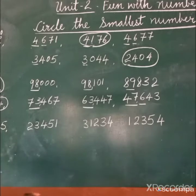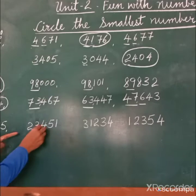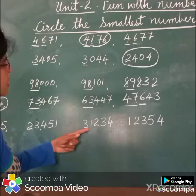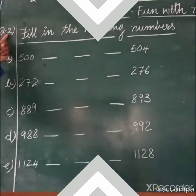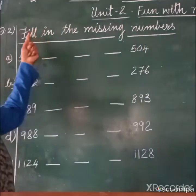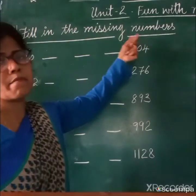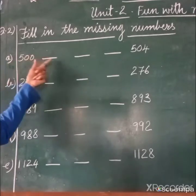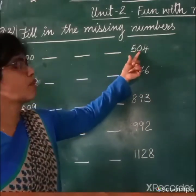Next, question number 2. Fill in the missing numbers. What is the question? Fill in the missing numbers. Question number A is 500, dash, dash, dash, 504.